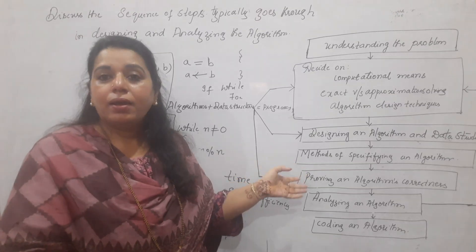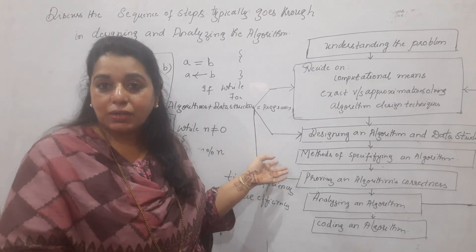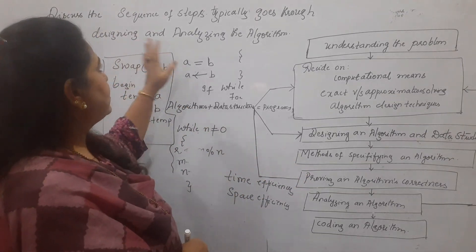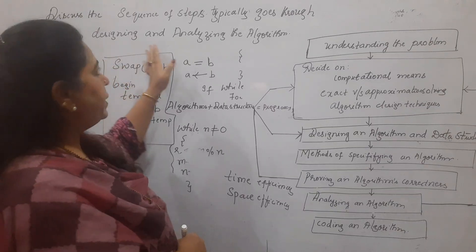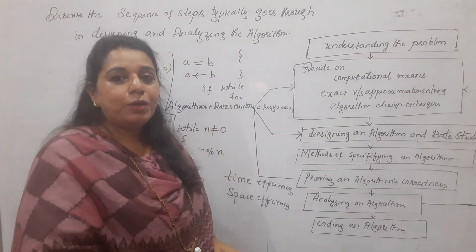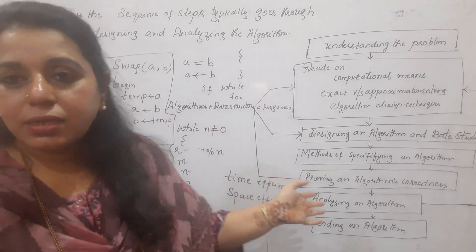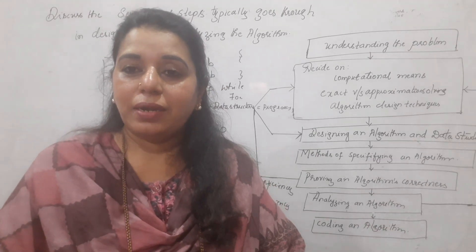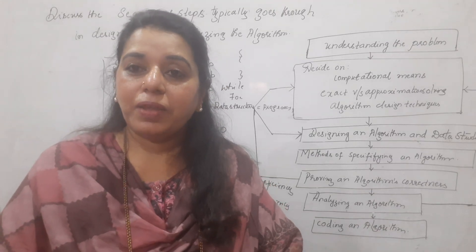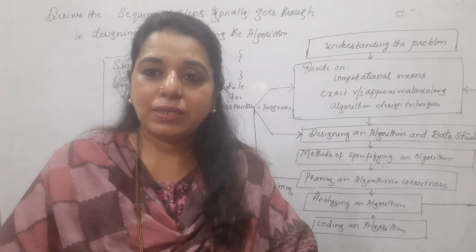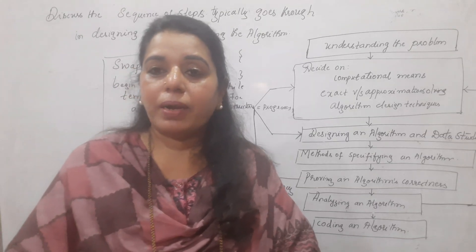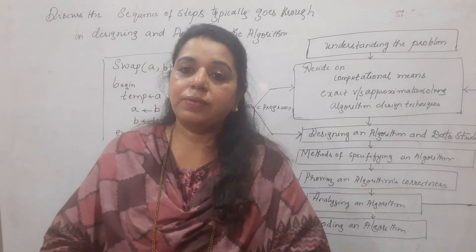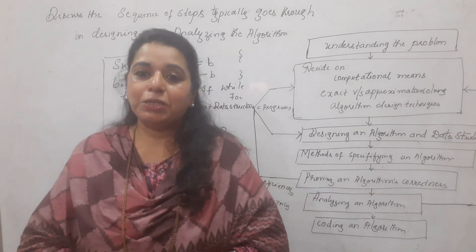This topic can also appear as an examination question for 6 to 7 marks, in the form: 'Discuss the sequence of steps typically gone through in designing and analyzing an algorithm.' You should sketch the diagram and give a description of each step. Though this is an introductory chapter, questions can be asked from it in examinations.